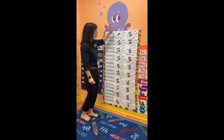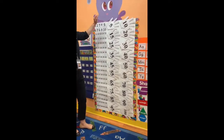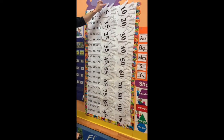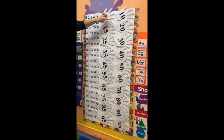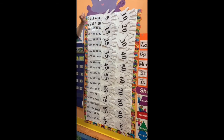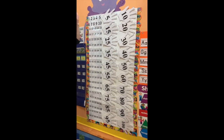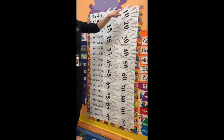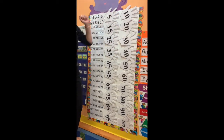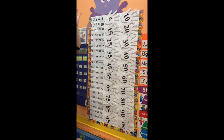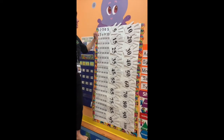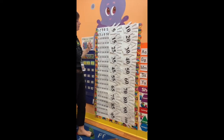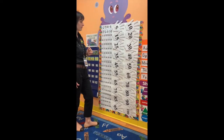How many fingers has one hand? Once again: five — one, two, three, four, five. So every time we add one hand, that means we add five fingers. So let's do first by five.